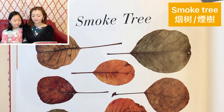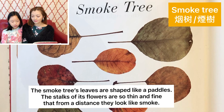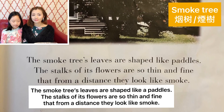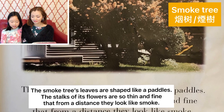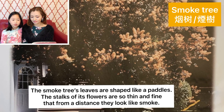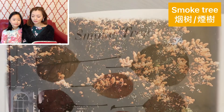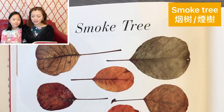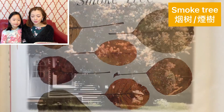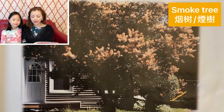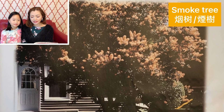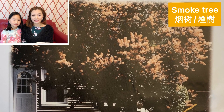Smoke tree. The smoke tree's leaves are shaped like petals. The stalk of its flowers are so thin and fine that from a distance, they look like smoke. 烟树。烟树的叶子形状像小船桨一样。烟树花的花柄细小而光滑，远远的看去，烟树就像是很多烟一样。